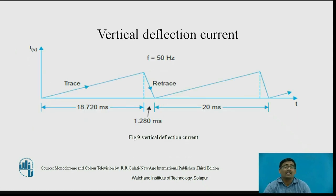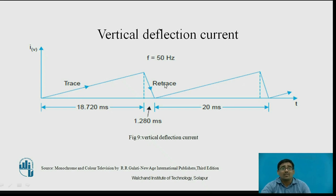For the vertical deflection current, the total time required is: trace period of 18.720 milliseconds plus retrace period of 1.280 milliseconds, giving a total of 20 milliseconds. From this time period, the frequency is calculated as 50 Hz for the vertical deflection current.